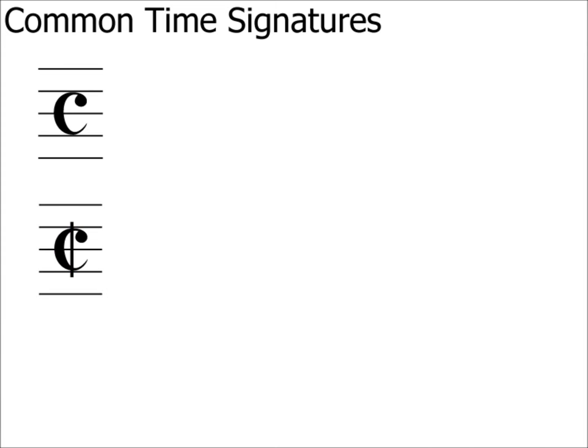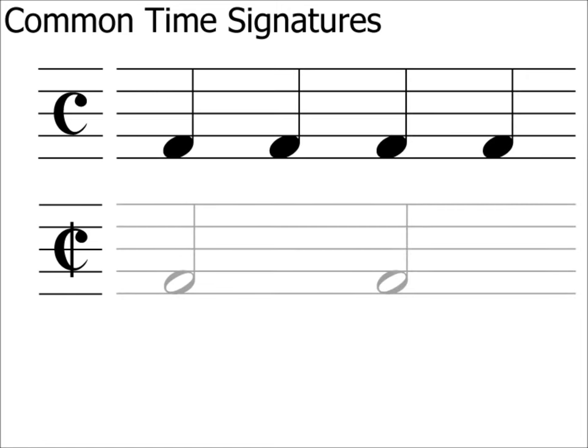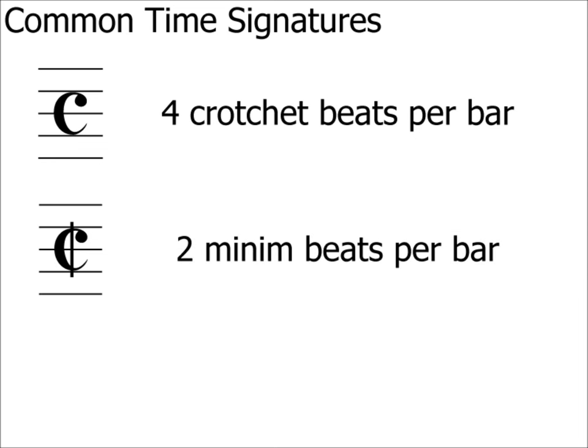A lot of students ask me why have 2/2 when you can just have 4/4, as they both have four crotchet beats in them. My answer is simply no — although 4/4 has four crotchet beats, 2/2 does not. It has two minim beats. Two minims can be split into two crotchet beats each, but 2/2 is quite commonly used for faster music, whereas 4/4 is generally used for slower music in 4. What's important is that you understand that 4/4 has four crotchet beats per bar and 2/2 has two minim beats per bar.